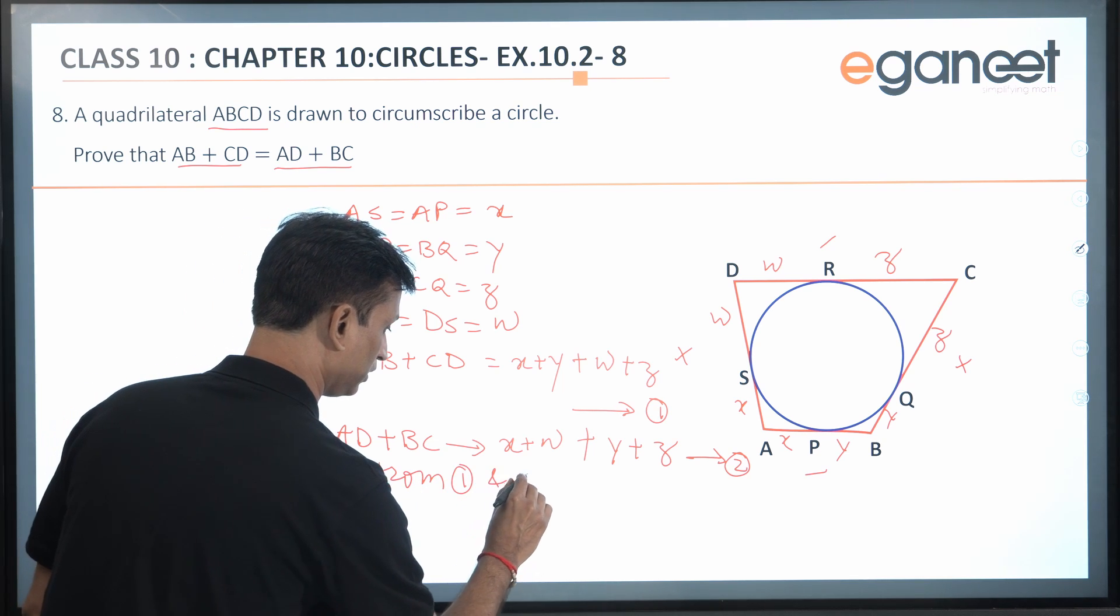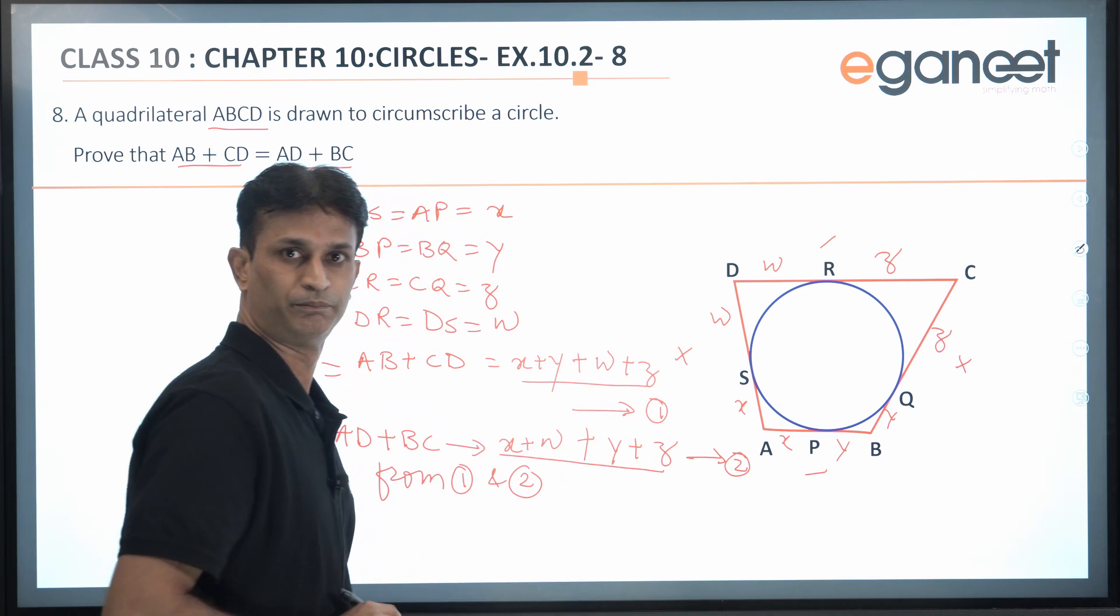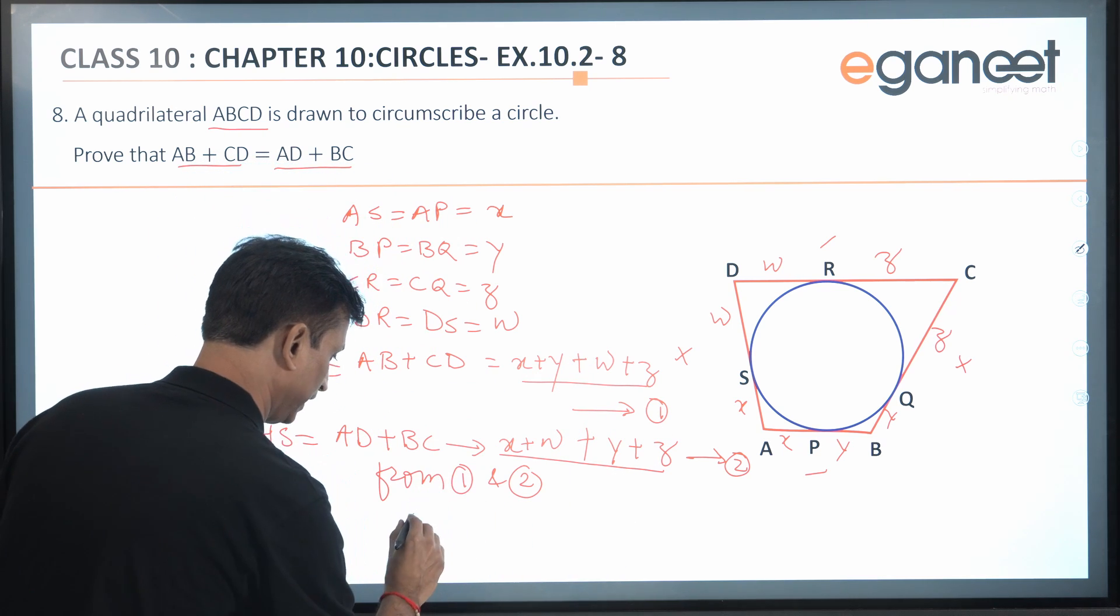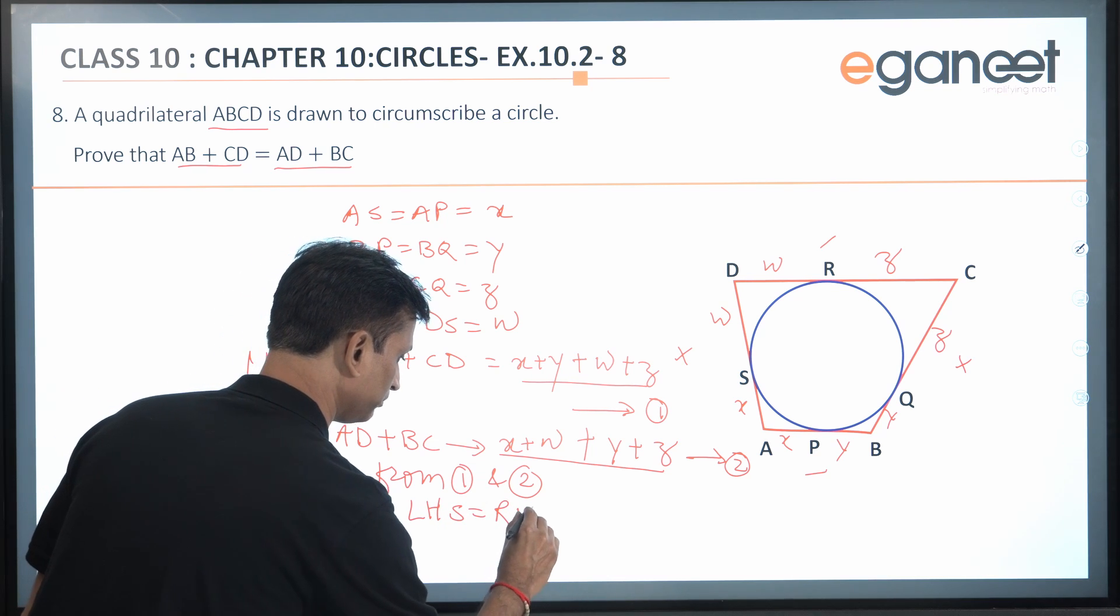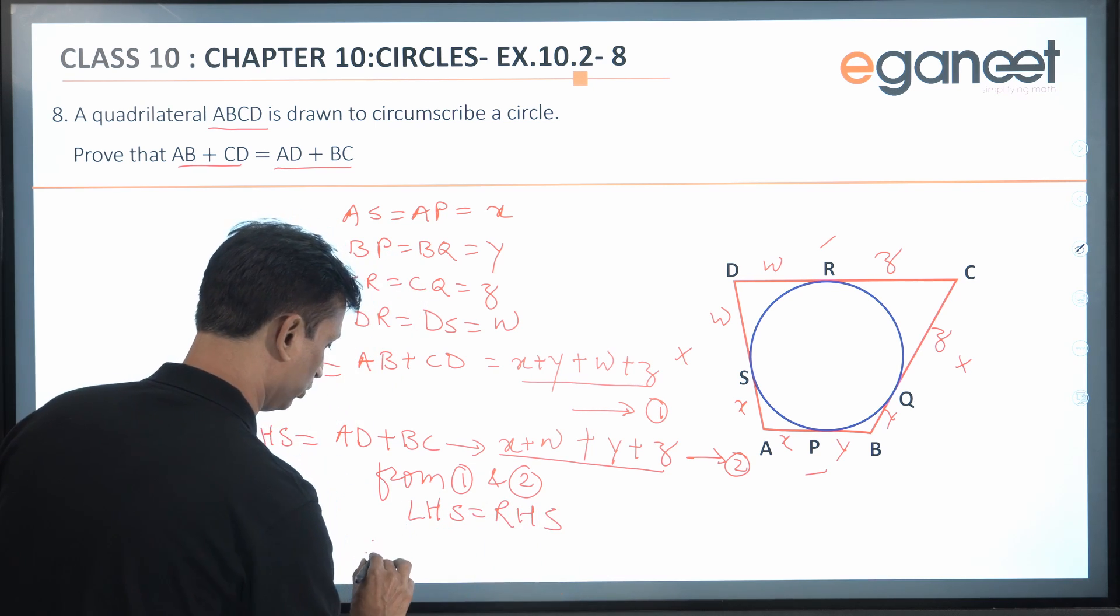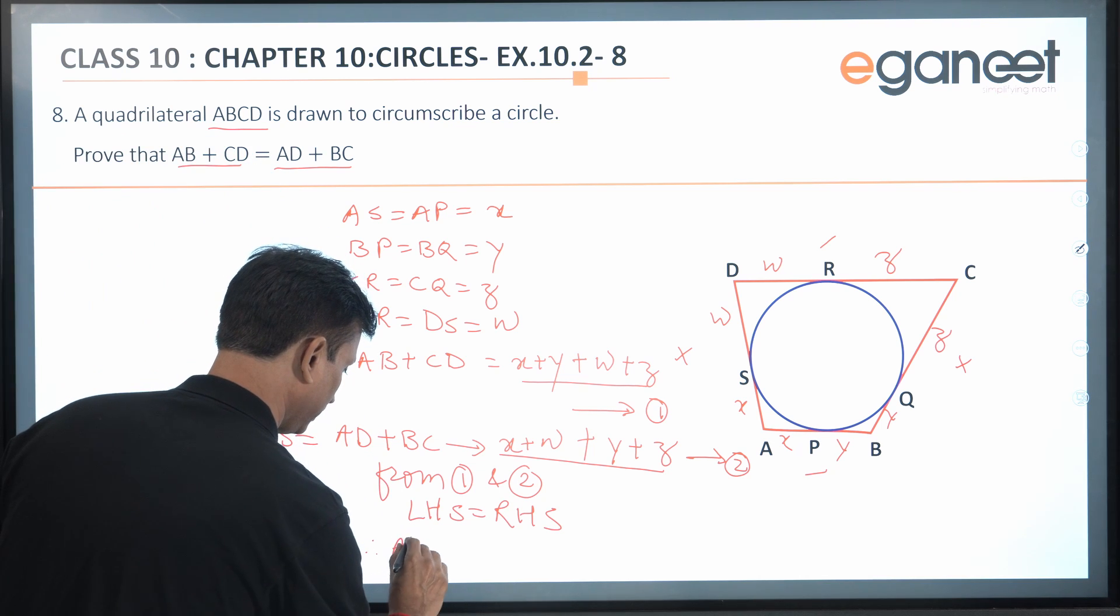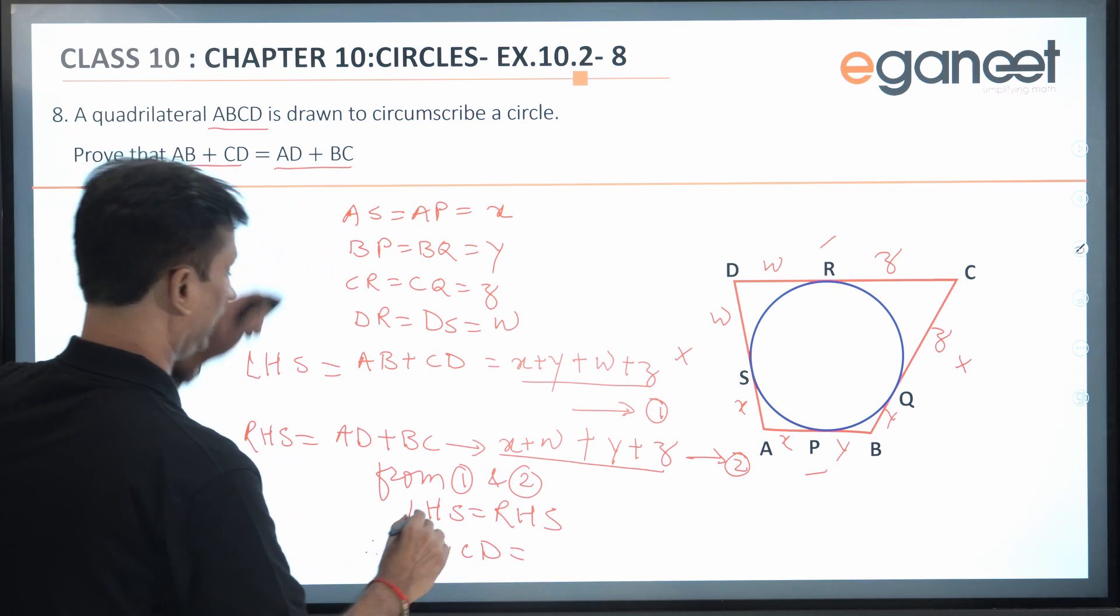From equations 1 and 2, x + y + z + w is the same on both sides. So we can say from 1 and 2, LHS = RHS. Therefore, we can say AB + CD = AD + BC.